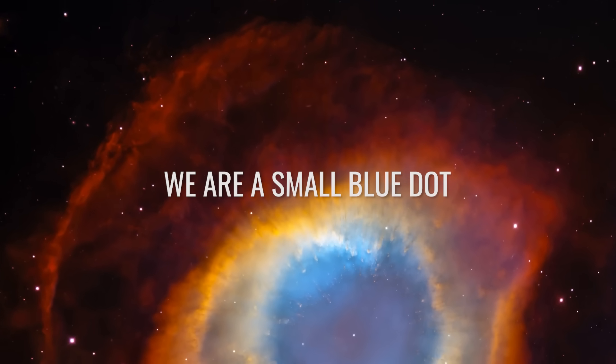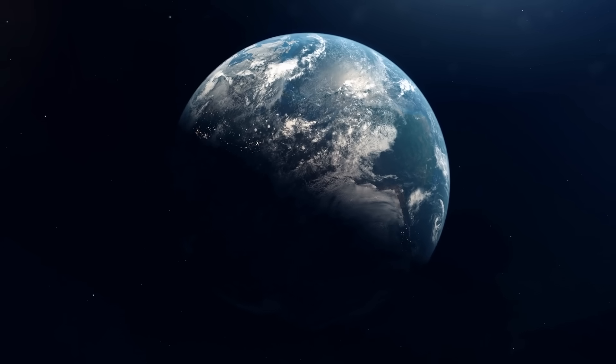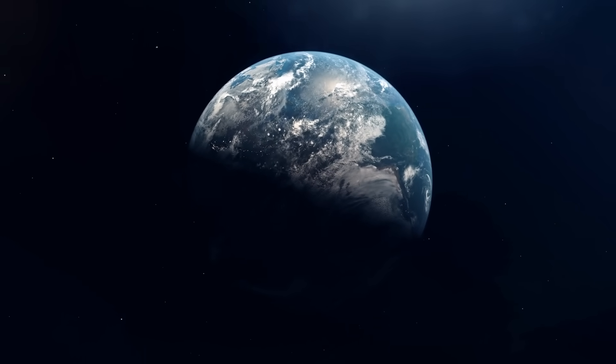We are a small blue dot. The famous photo of Earth, taken by Voyager 1 from a distance of around 6 billion kilometers, is considered one of the best in the history of space travel. Our Earth, which is huge and everything to us, shrinks to a small, blue, pale dot even in the enormous dimensions of our own solar system.